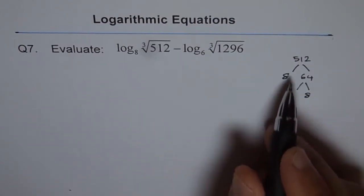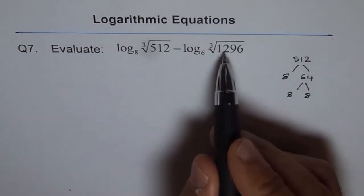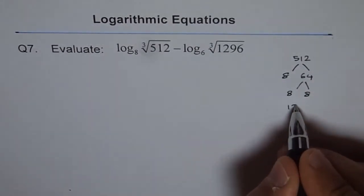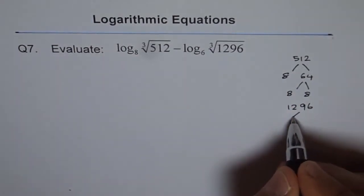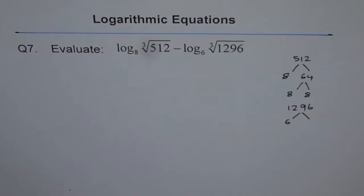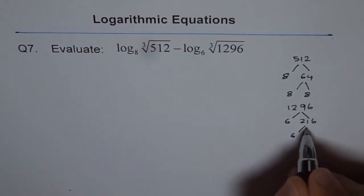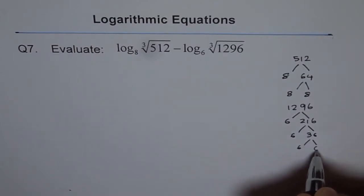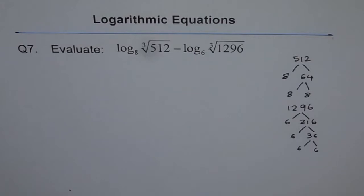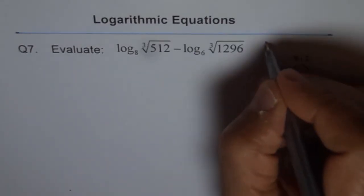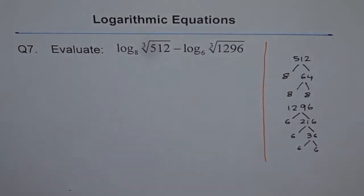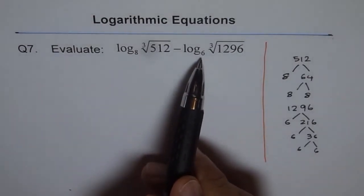Similarly, I should do 1296. We want to write this as a power of 6, so let's divide it by 6. 1296 divided by 6 is 216. Divide 216 by 6 again, we get 36. 6 times 6 is 36. So 1296 is 6 to the power of 4. This isn't prime factorization since 6 and 8 aren't prime numbers, but factorization in terms of the base is of our prime interest.